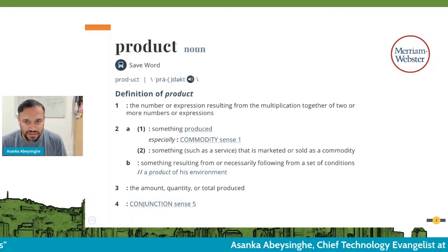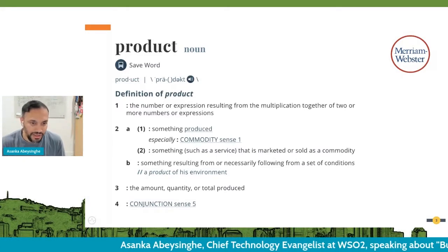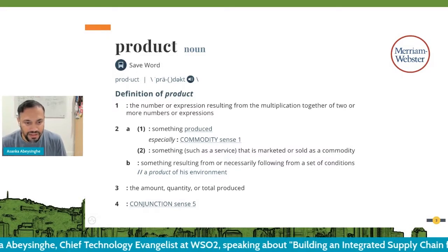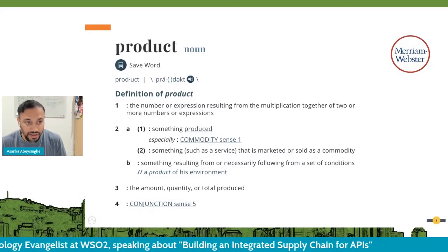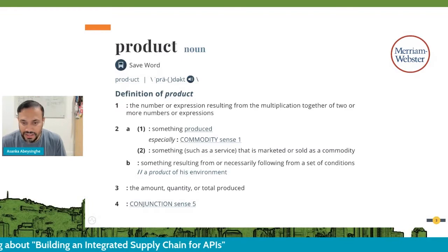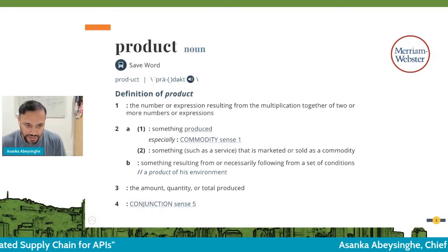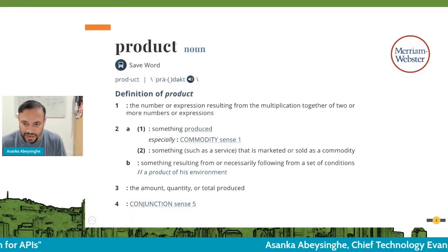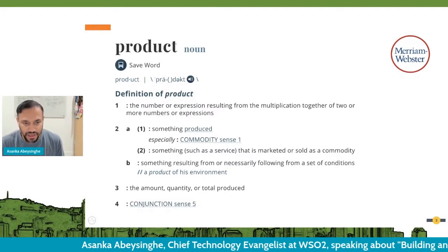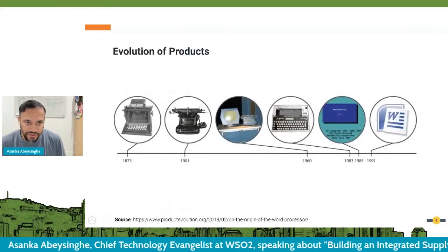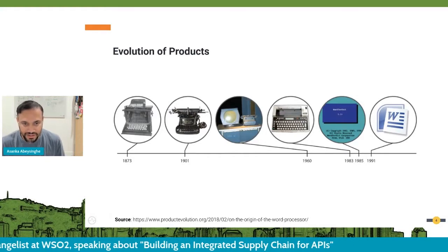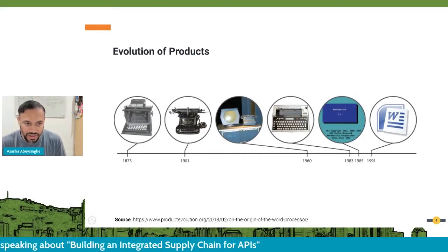If you look at a definition for product, you might find different definitions. But I think the best definition I found is that a product is something or a service that is marketed or sold as a commodity. To explain product evolution, I took the example of typewriters and how these things got evolved.